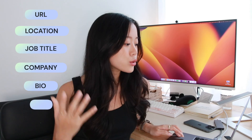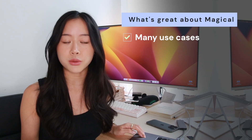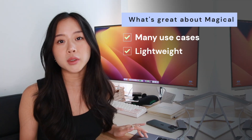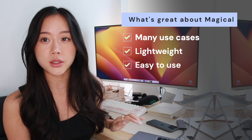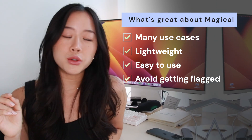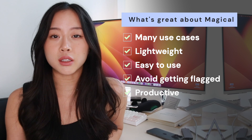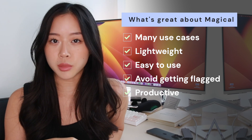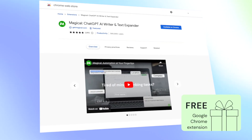It's a great way to get started for your data entry needs. You have their URL, location, job title, company, bio, what school they went to, how many followers they have. There are really so many use cases that you can use with Magical. This is a super lightweight and really easy way for you to get started on web scraping without getting flagged by whatever website you're on — and with just one click, grab so much information and put it into one place. Something that would have taken you hours to do with copy and paste, switching tabs and getting distracted.